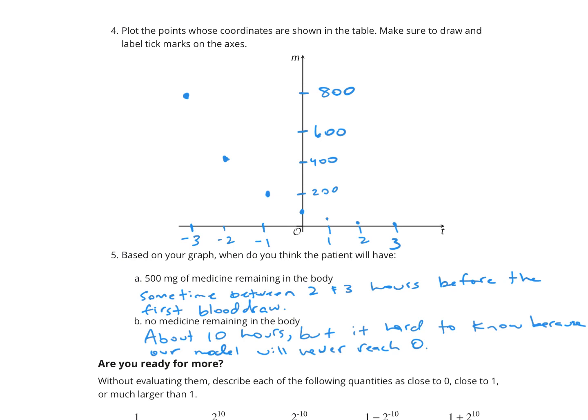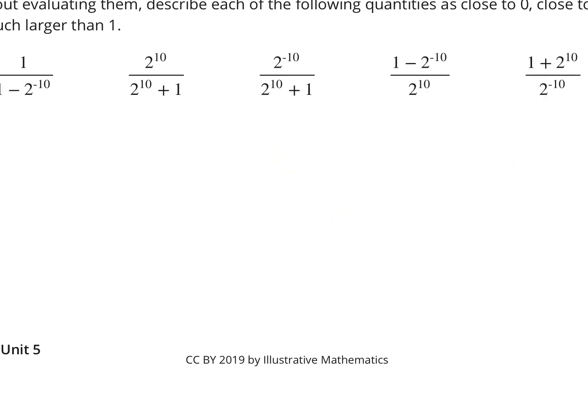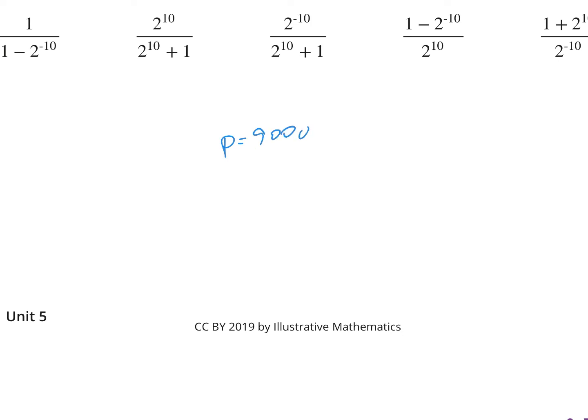Today we looked at situations where negative values representing times are meaningful. For example, if P equals 90,000 times 3 to the T power, where P is the population of a colony of bacteria and T is days since Monday, then a negative value of T represents days prior to Monday — Sunday, Saturday, and so on. Anything positive would be after Monday. That's it for today's lesson. Don't forget to submit and you can start working on your cool down. Thanks for watching.